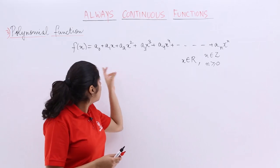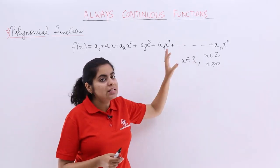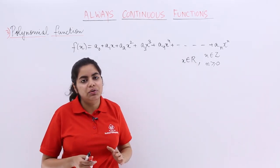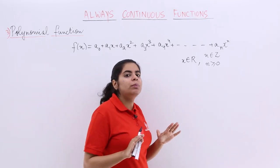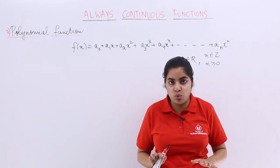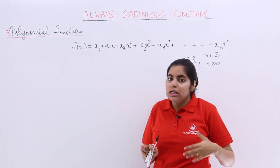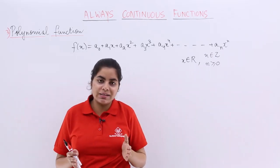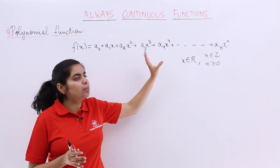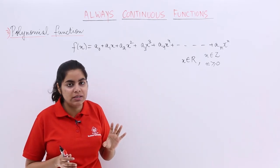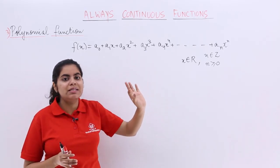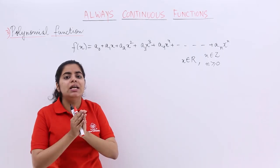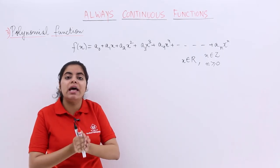And what about all the variables — that means x? x should be any real number. This we know about polynomials from class 9th, and even from class 8th. Now that we know what a polynomial is, this is a polynomial function, and we basically have to prove that this polynomial function is continuous everywhere.